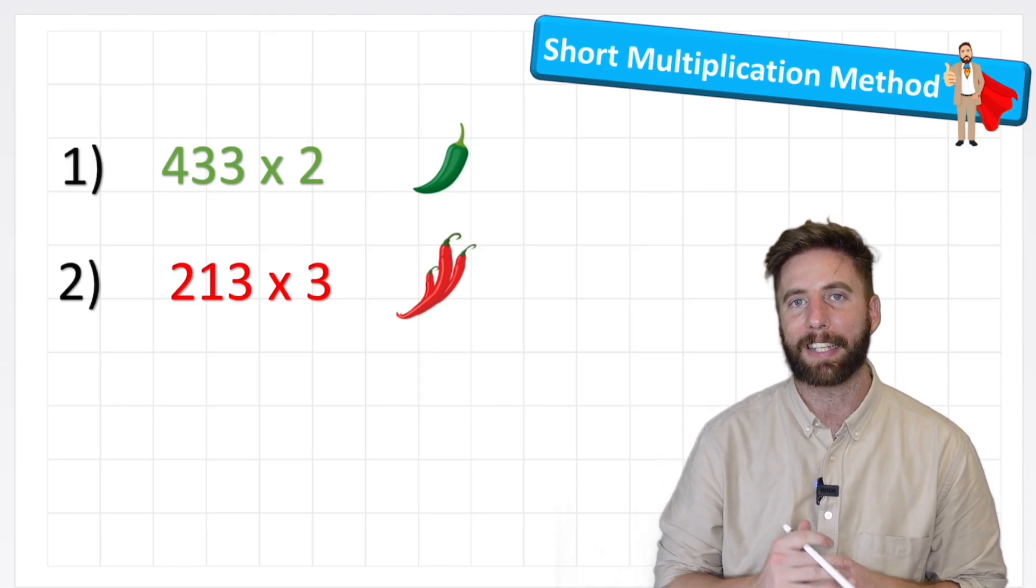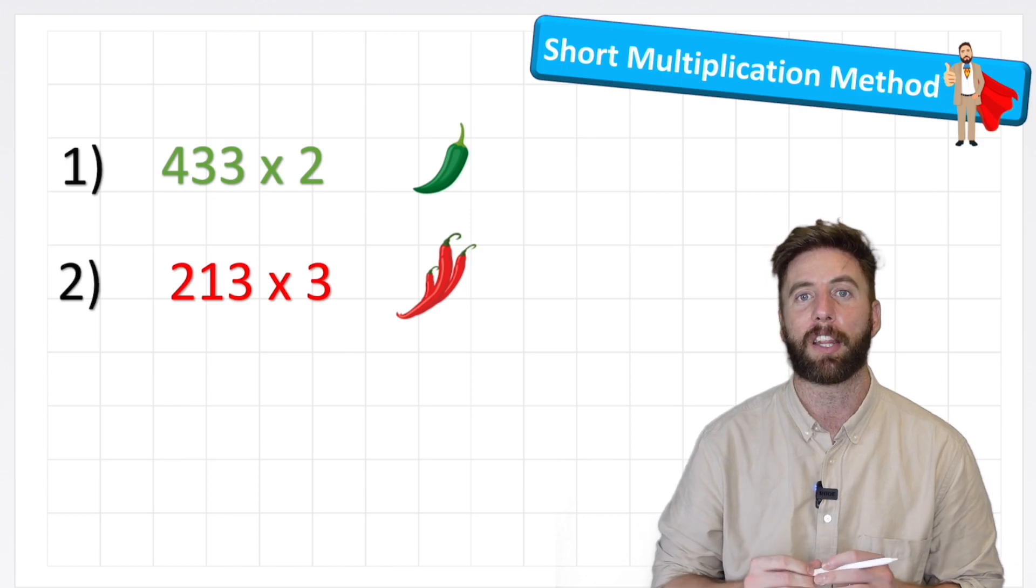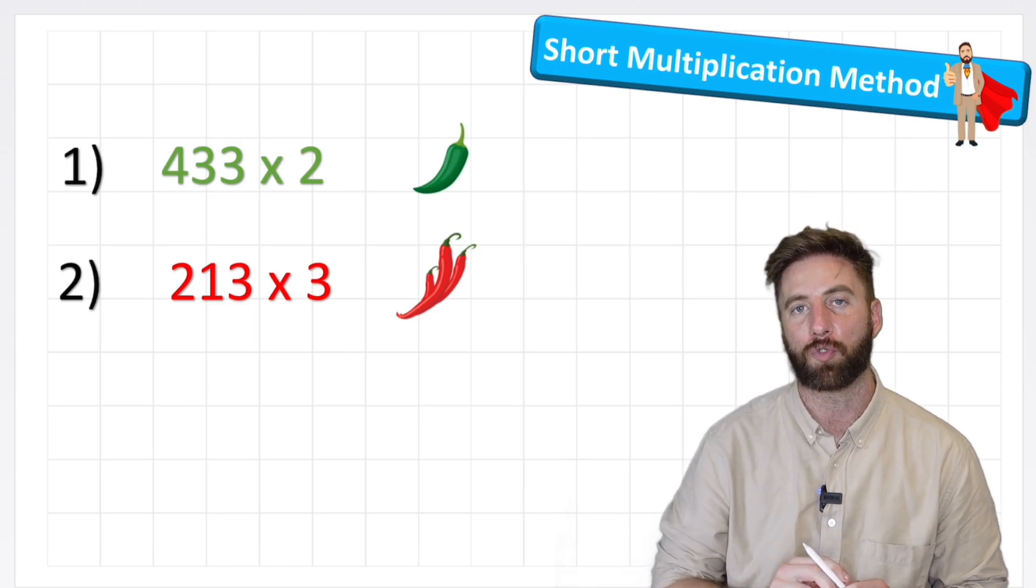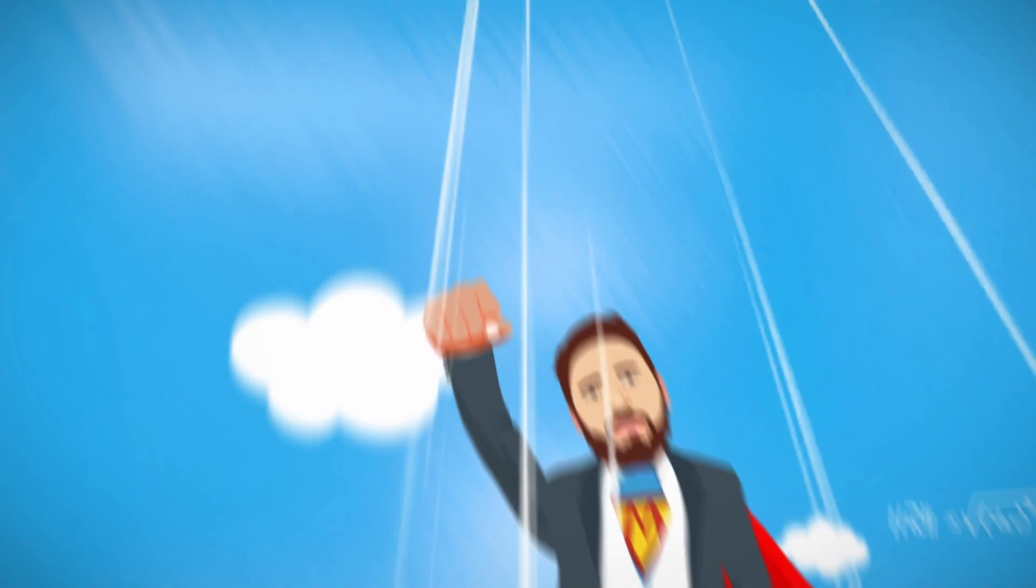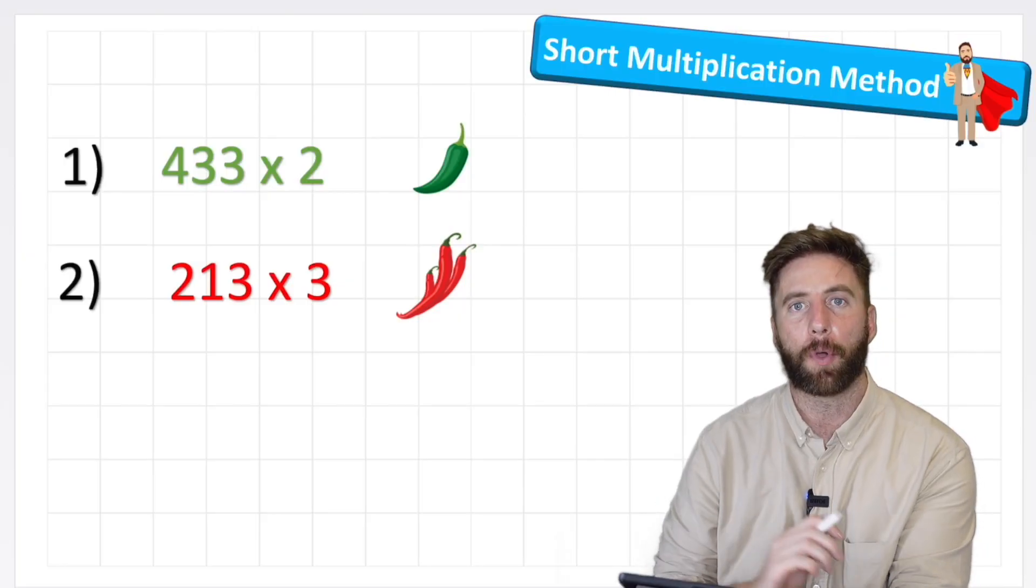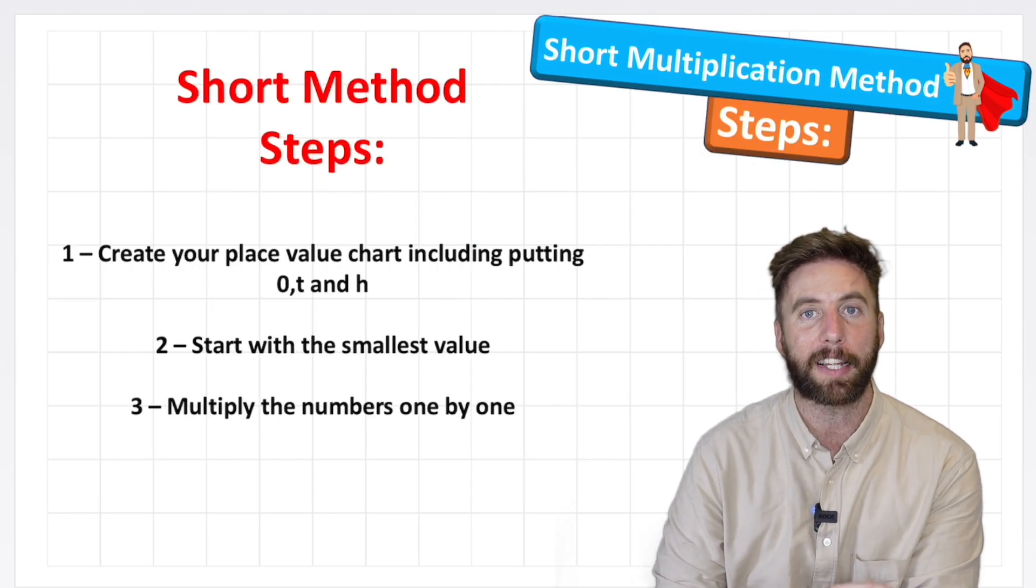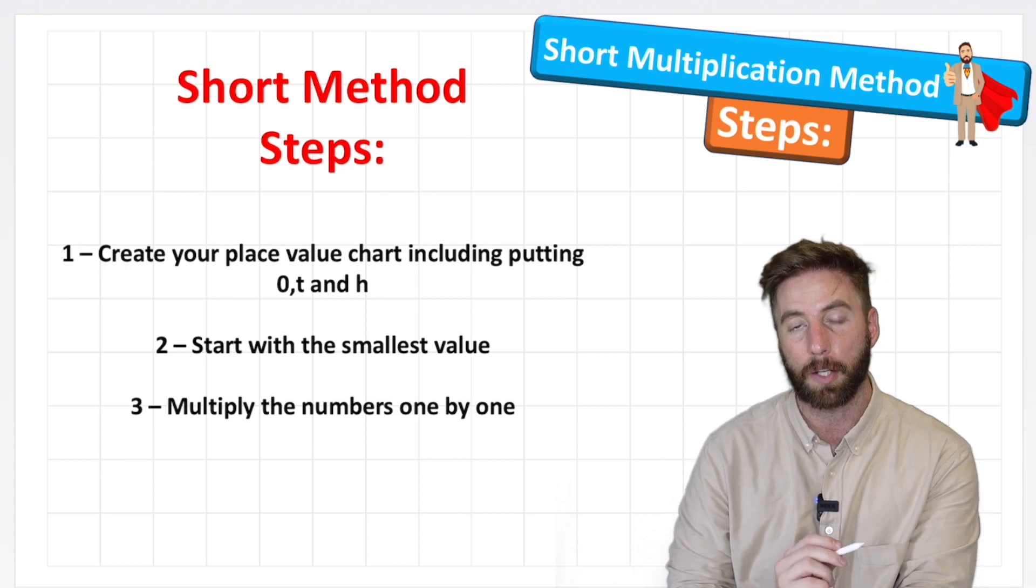What is up everyone, welcome back. Today we're looking at multiplying a three-digit by a one-digit number, and we're going to be using the short method without regrouping. Let's start. We're going to look at these two questions. I've got a green and a red chili challenge, one slightly harder than the other. But before we can do that, let's have a look at our steps of success and the things that we need to follow in order to get the right answer.